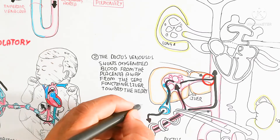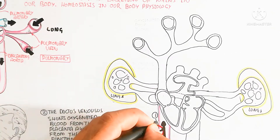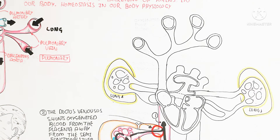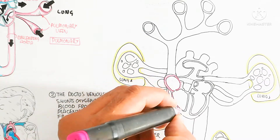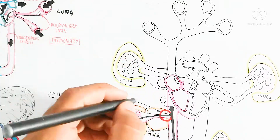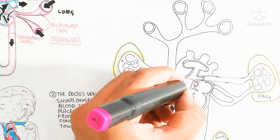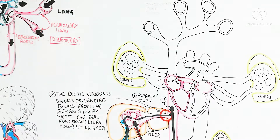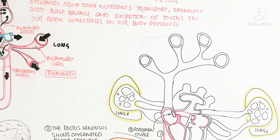When blood enters the heart in the fetus, it moves through the inferior vena cava into the right atrium. In the fetus, the right atrium receives oxygenated blood — unlike the adult, where it receives deoxygenated blood. The foramen ovale directly transfers blood from the right atrium to the left atrium through a vessel-like structure, resulting in mixed blood containing approximately 50% oxygen and 50% carbon dioxide.